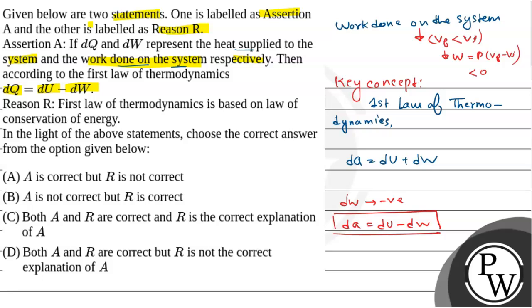In case of work done on the system, the sign of work done is negative. That's why dQ equals dU minus dW. So our assertion is correct.